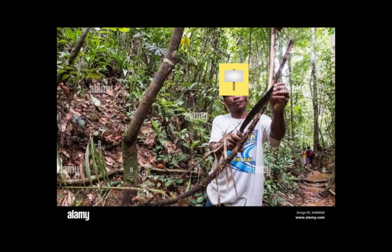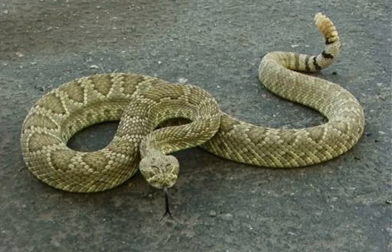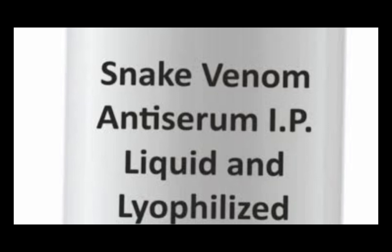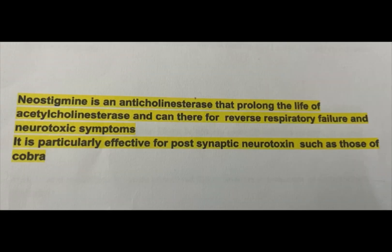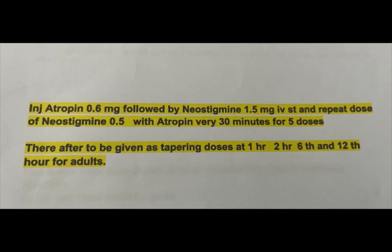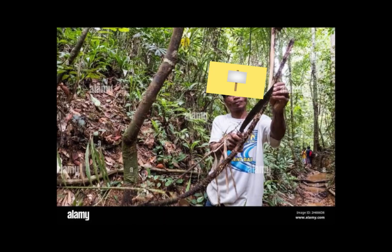Next case: A patient with snake bite and ptosis has been started on ASV but neurological symptoms are worsening. Anti-snake venom alone cannot be relied upon to save patients with respiratory failure. Perform the atropine-neostigmine challenge test. Neostigmine is an anticholinesterase that prolongs the life of acetylcholine at the neuromuscular junction and can reverse respiratory failure and neurotoxic symptoms; it is particularly effective for post-synaptic neurotoxins such as those of cobra. Give atropine 0.6 mg IV followed by neostigmine 1.5 mg IV, and repeat every 30 minutes for five doses. Majority of patients improve within the first five doses; any improvement should be visible as improvement in ptosis within 30 minutes.